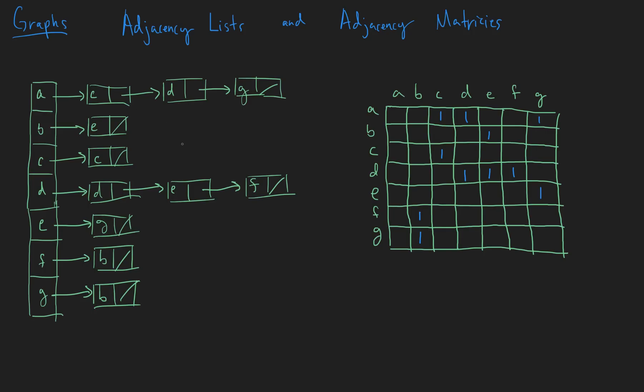So that's what our matrix looks like. Now, this is a directed graph, and we know that because it is not symmetrical. That means there's not an edge both ways — you can see there's an edge from A to C, but there's not an edge from C to A. So this is a directed graph.